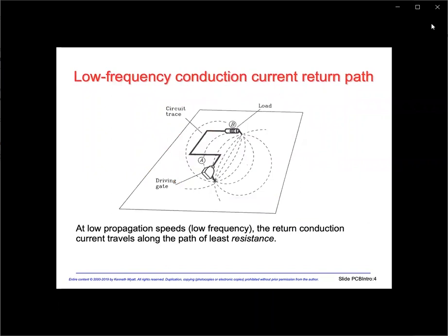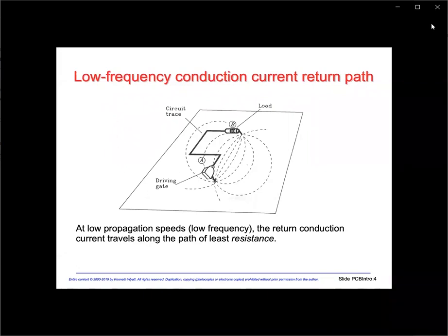One important concept to understand is that for low frequency signals, the return conduction current path is relatively spread out along the return plane and mostly takes a direct path from load back to the source. We call this the path of least resistance. So what constitutes low frequency? Something less than 50 to 100 kilohertz. This concept is most important for audio or other low frequency technologies.